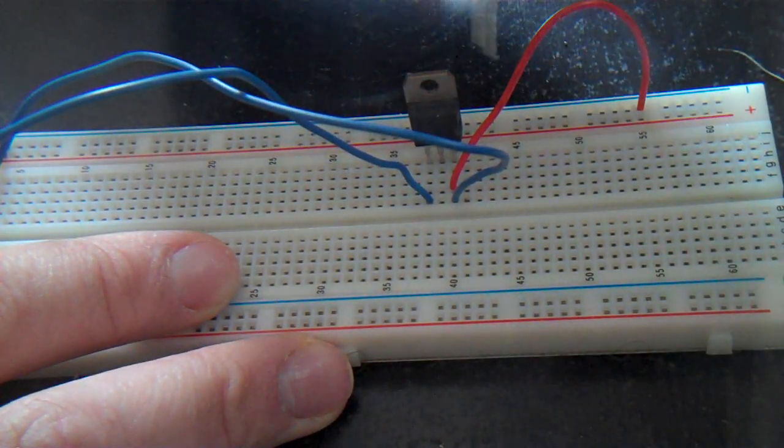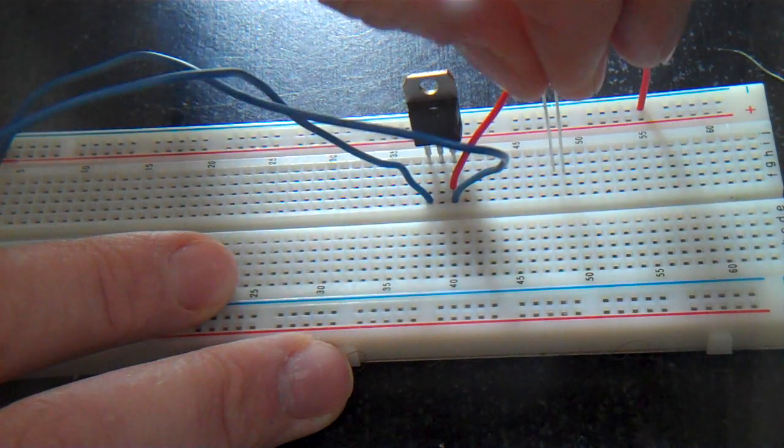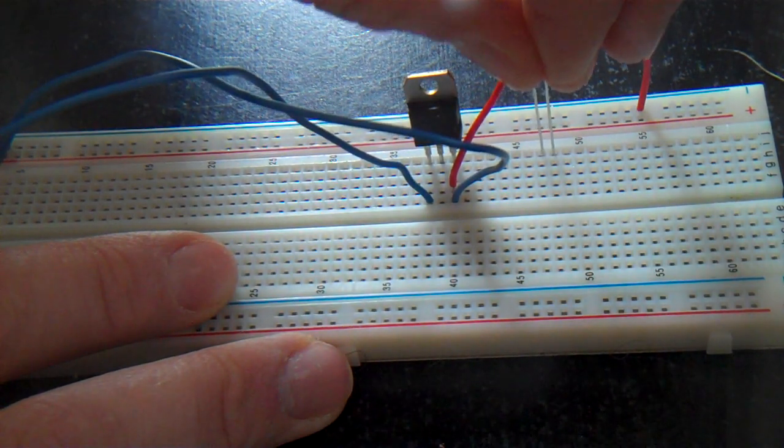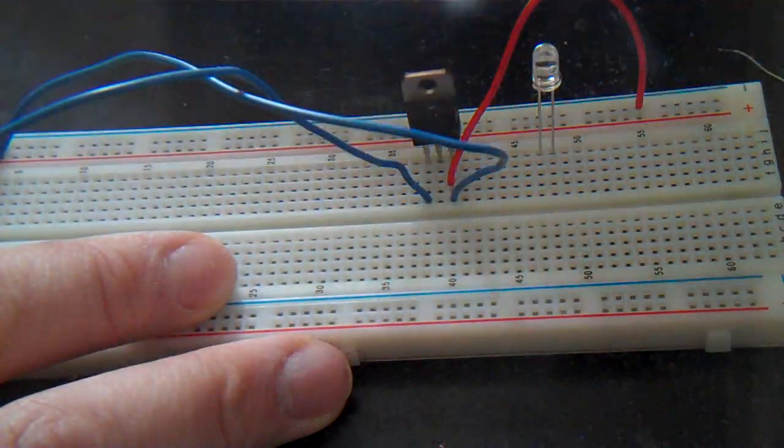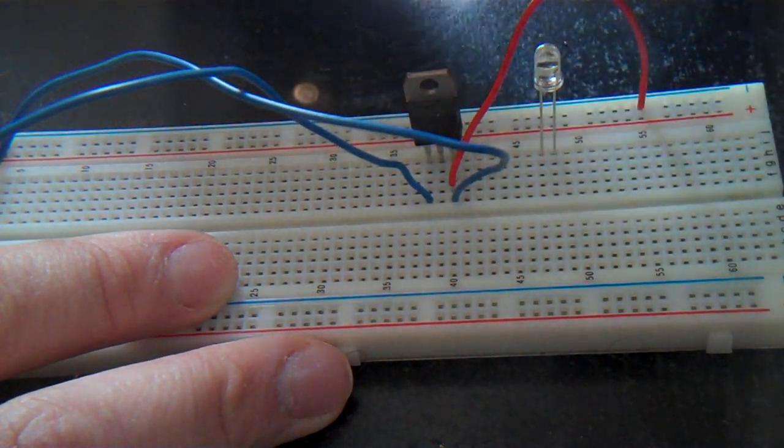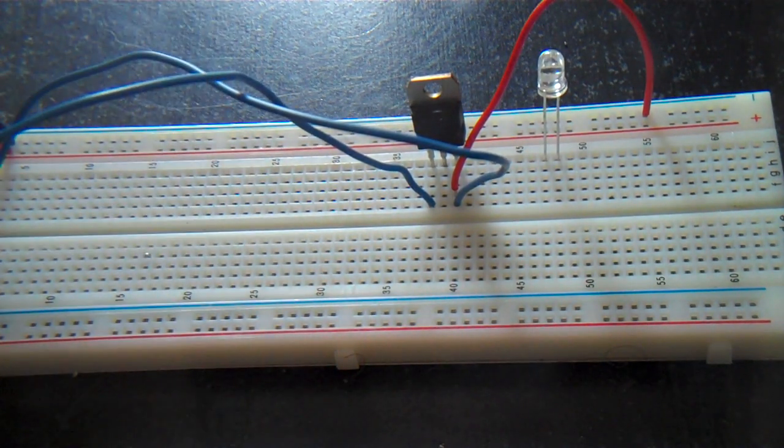Then I'm going to take my 3.3 volt LED. Let's put it somewhere over here with the positive lead on the right and the negative lead on the left. So I still only have three wires connected to the TIP 31.